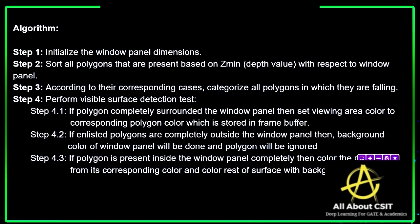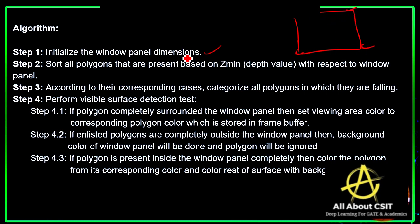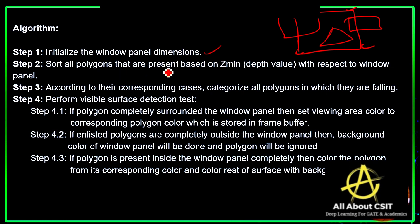Now let's see the algorithm. First, initialize the window panel dimensions — the four sides. Second, sort all polygons present based on their depth value with respect to the window panel. Third, according to their corresponding cases, categorize all polygons into which category they are falling, then perform visible surface detection.